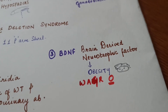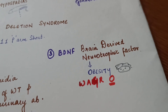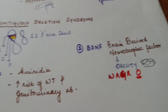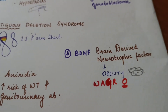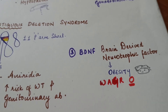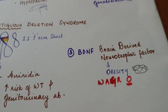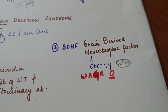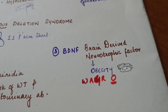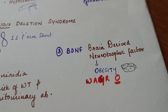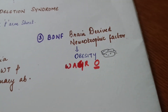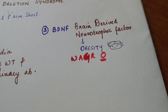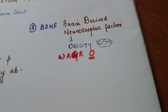Sometimes the deletion is larger, causing additional genes to be deleted. For example, deletion of BDNF — brain-derived neurotrophic factor — leads to obesity. In this case, the syndrome is called WAGRO syndrome, with the O representing obesity.